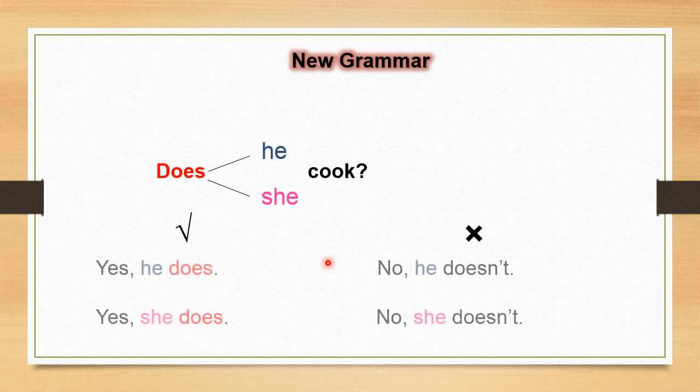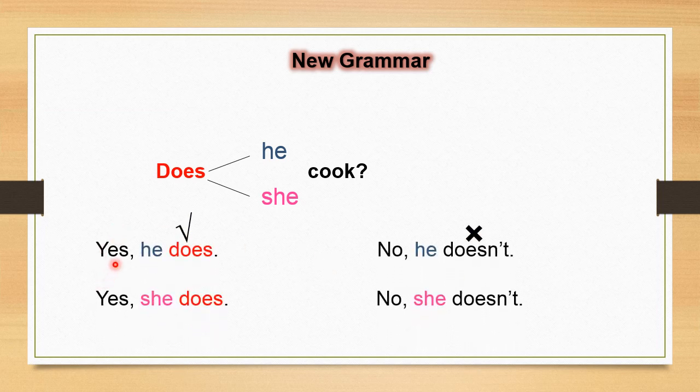When we answer, we will use yes or no. If we say yes, we say yes he does or yes she does. If we will say no, we will say no he doesn't or no she doesn't. في النافي بنستخدم doesn't.